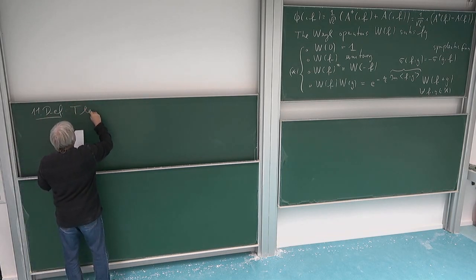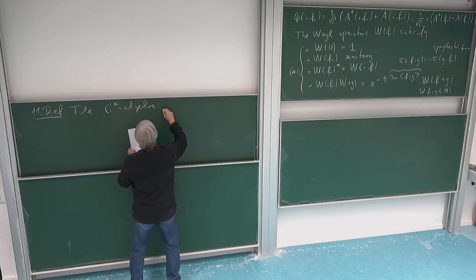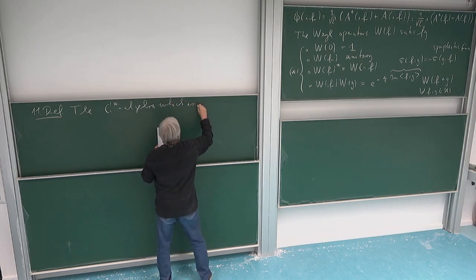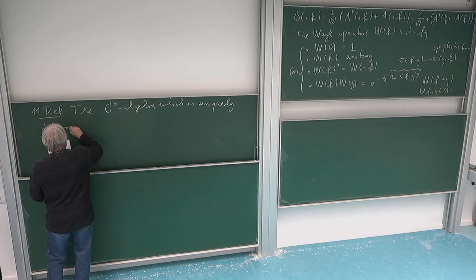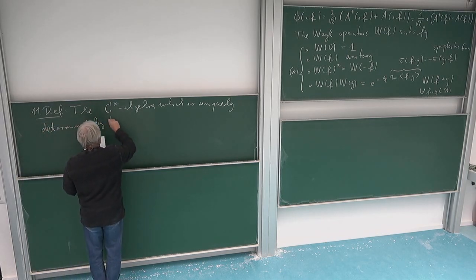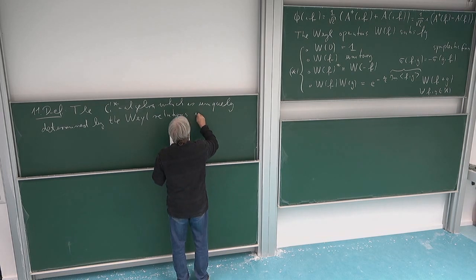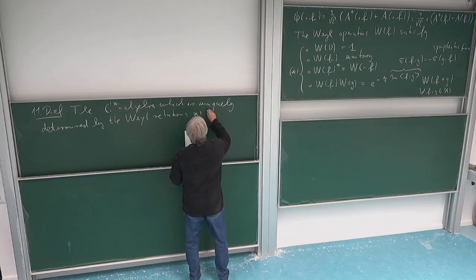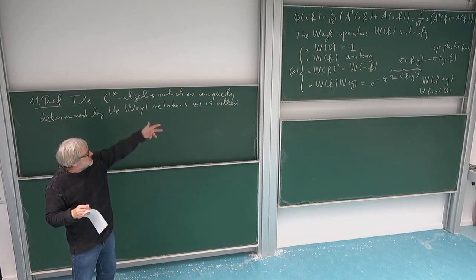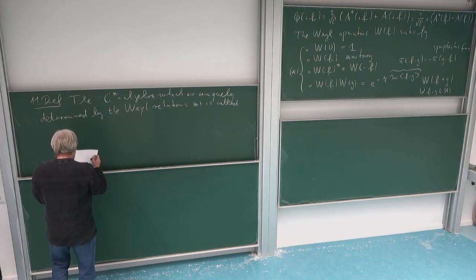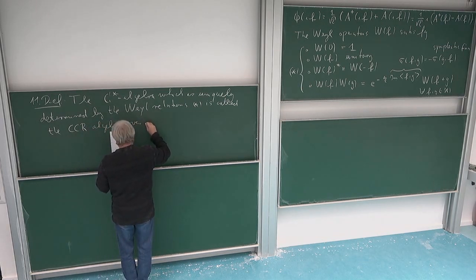So the C-star algebra, which is uniquely determined by the Weyl relations. So this C-star algebra is usually called CCR algebra over H. Of course it depends on the underlying Hilbert space H. So this is called the CCR algebra over H.